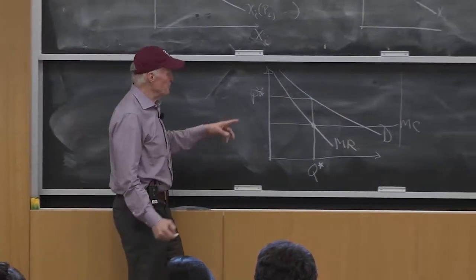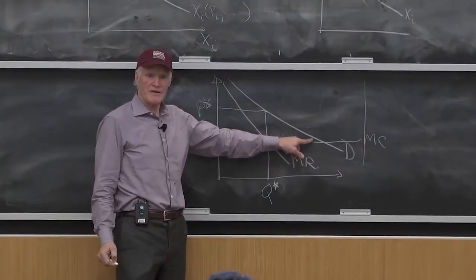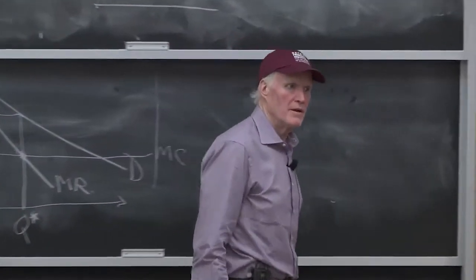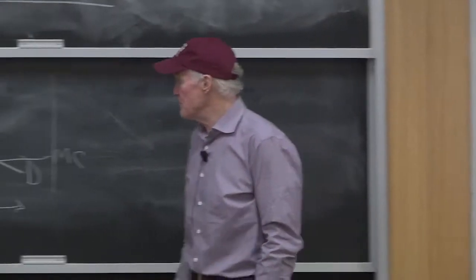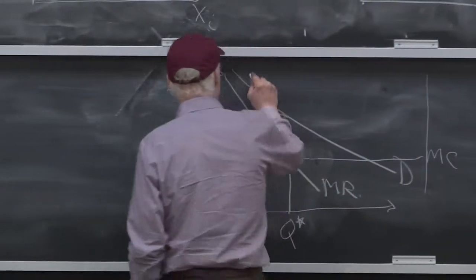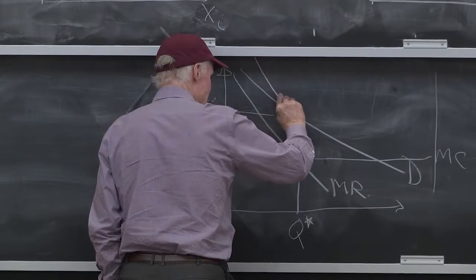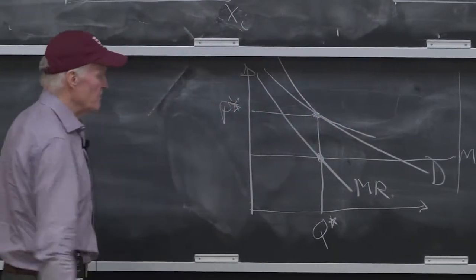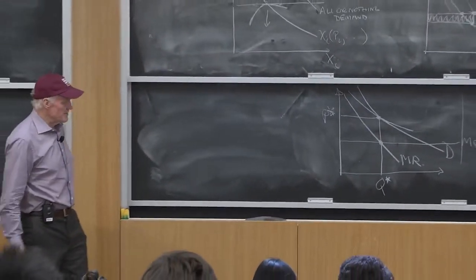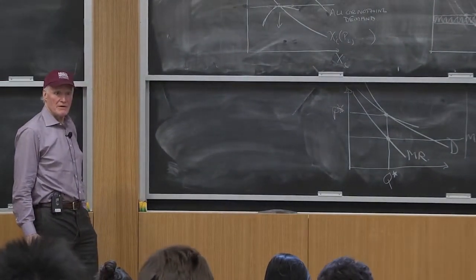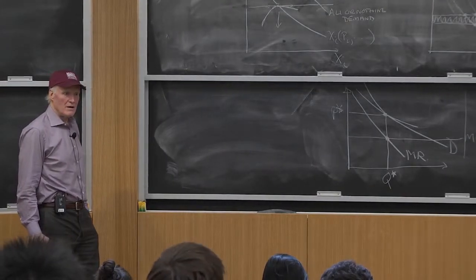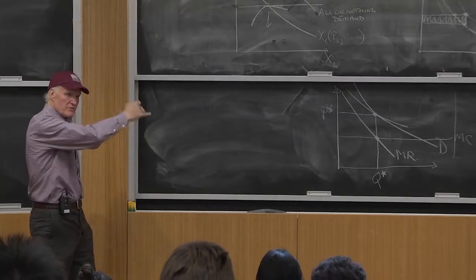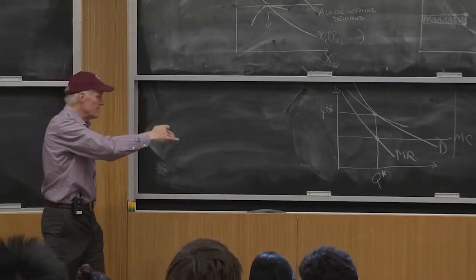He's maximizing subject to being somewhere on the demand curve. That's what the monopolist is. He can't be outside the demand curve because this is a linear pricing problem. He's maximizing subject to being on the demand curve. So his indifference curve is actually tangent to the demand curve. The monopolist has an indifference curve that's tangent to the demand curve. He wants to maximize profits. There are equal profits along that curve.